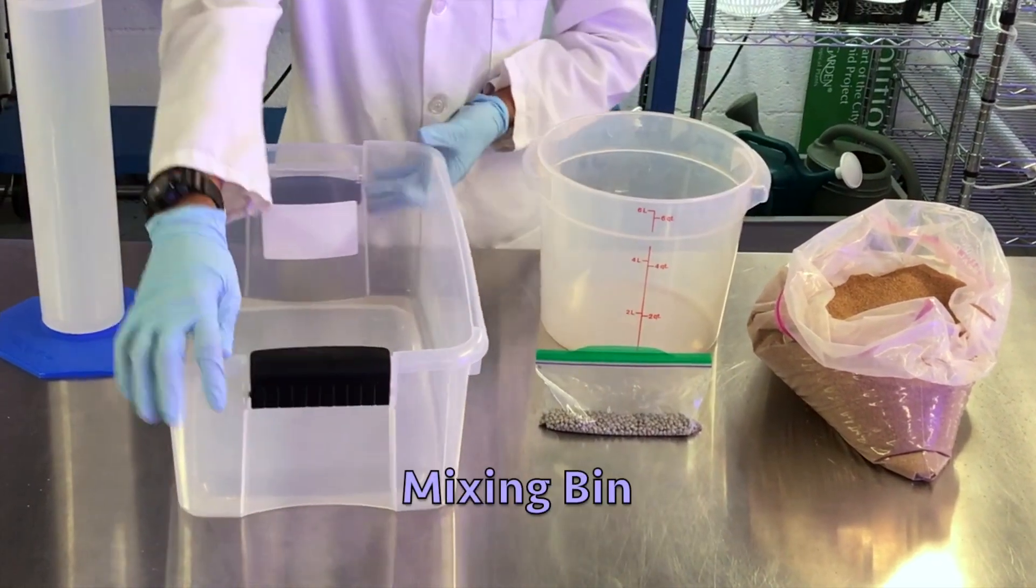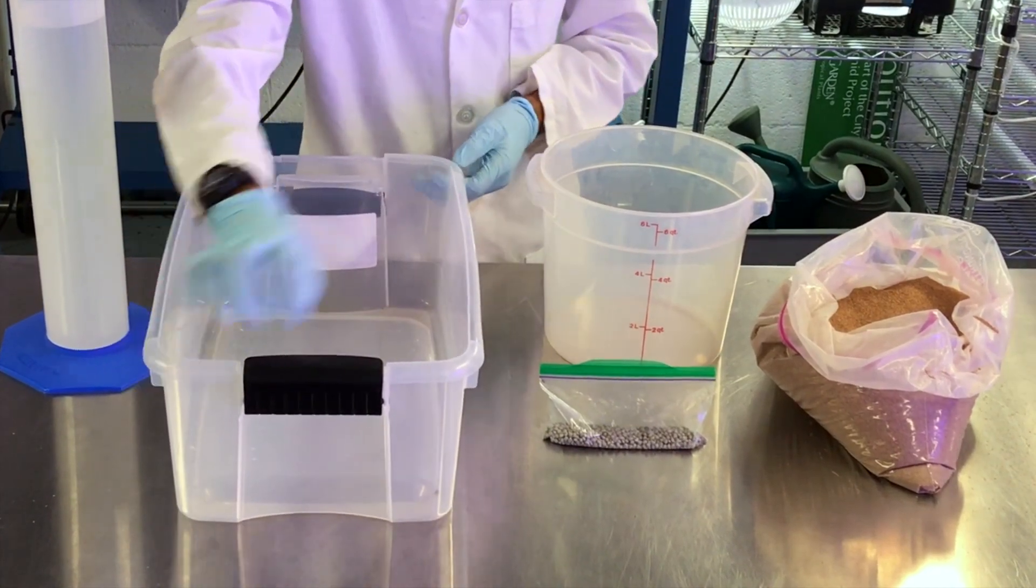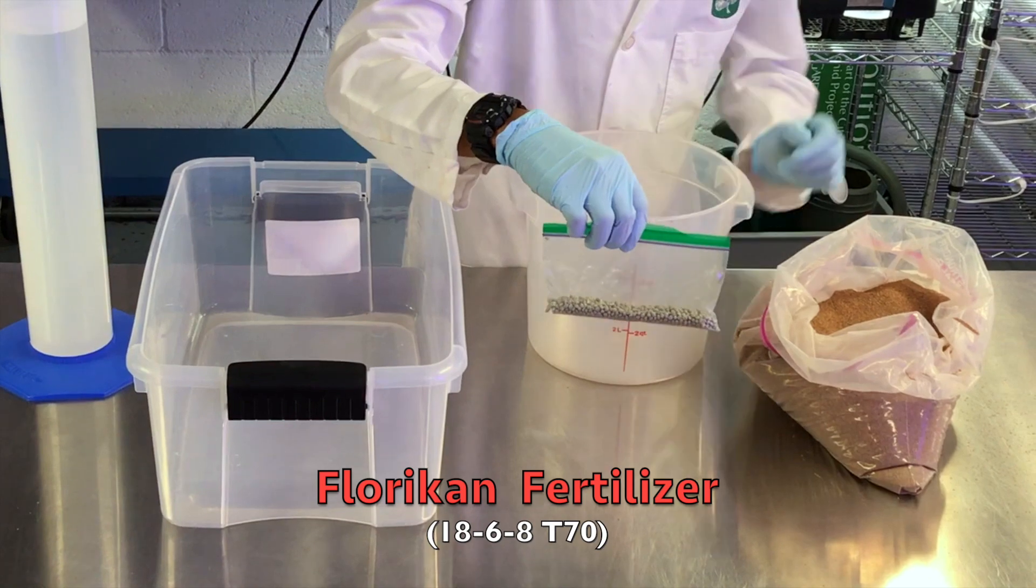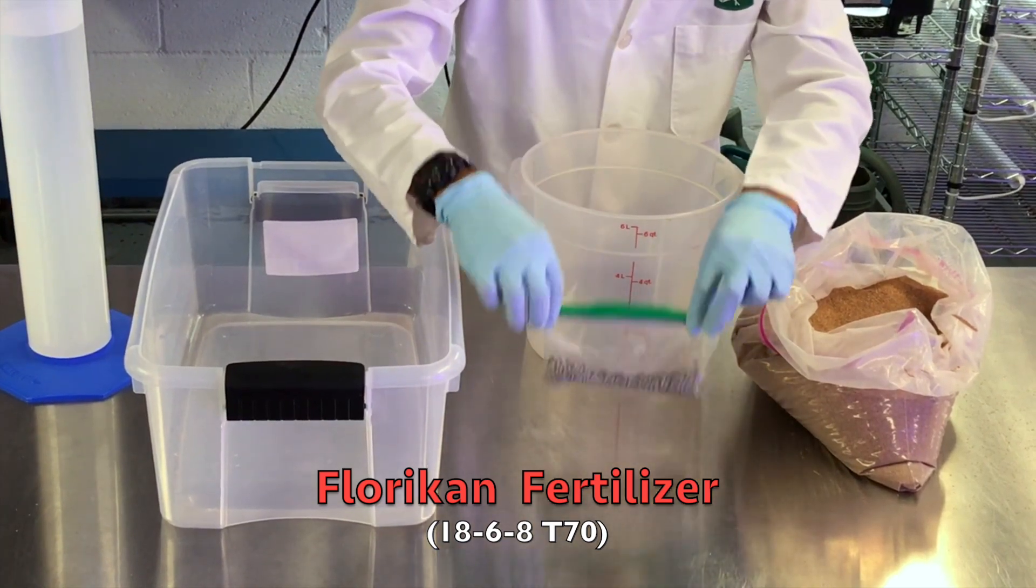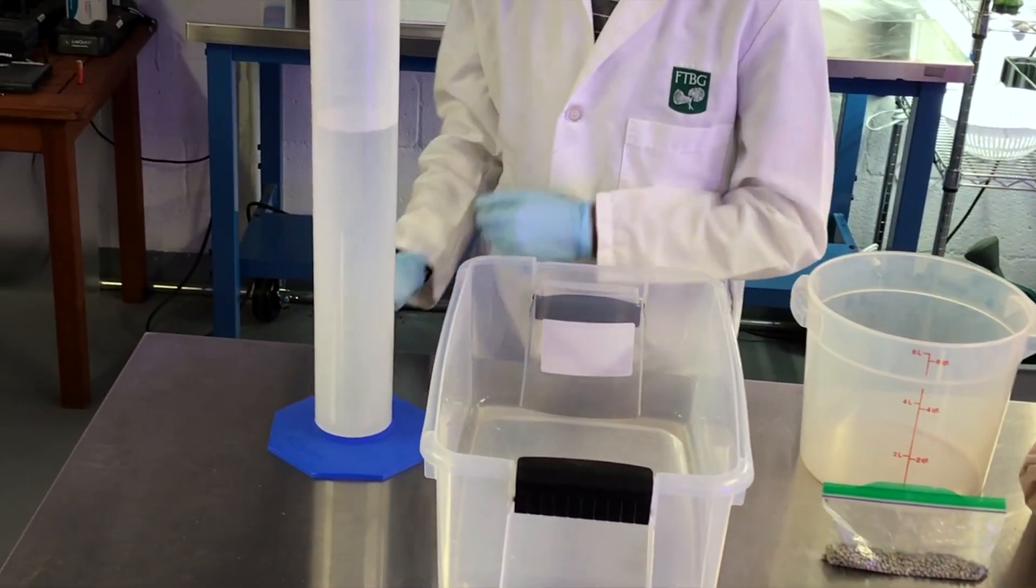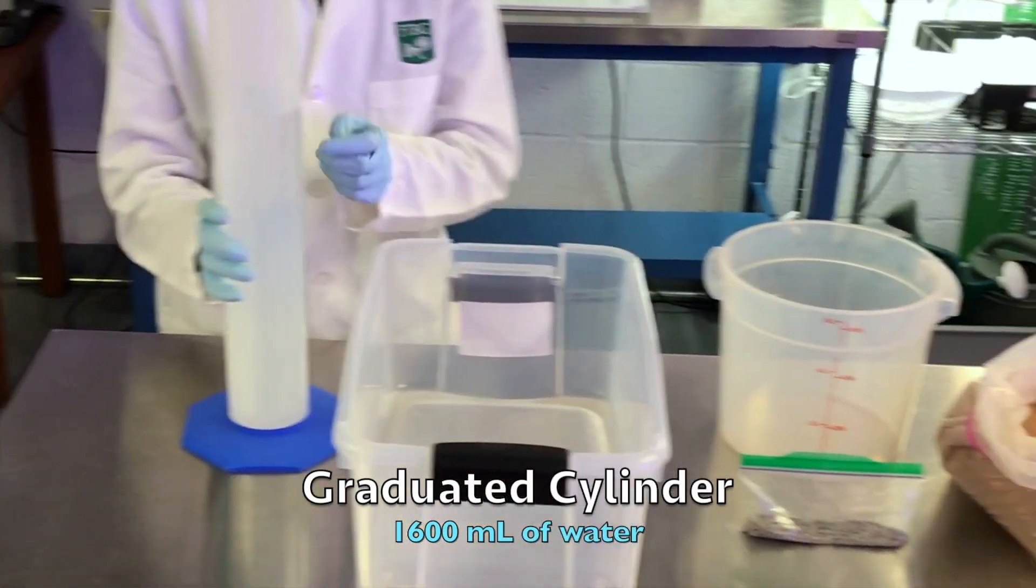A mixing bin in which you will mix all the contents of the medium, Florikan fertilizer which is a polymer-coated slow-release fertilizer with the nutrient ratio 18-6-8 and a release time of 70 days, and a graduated cylinder.